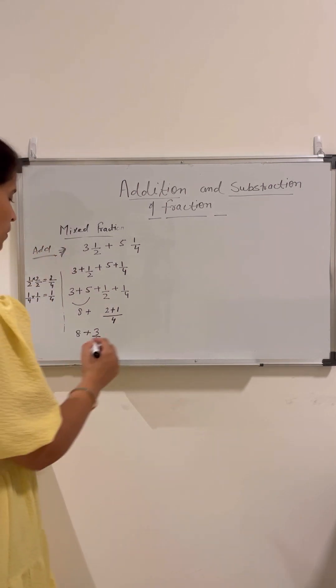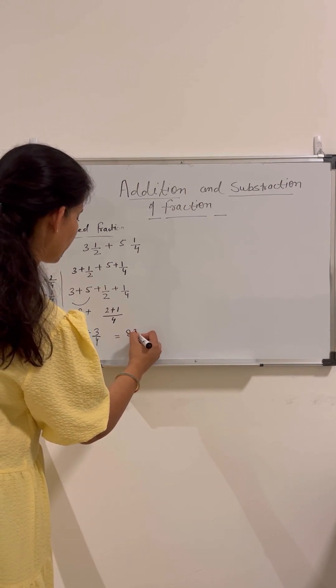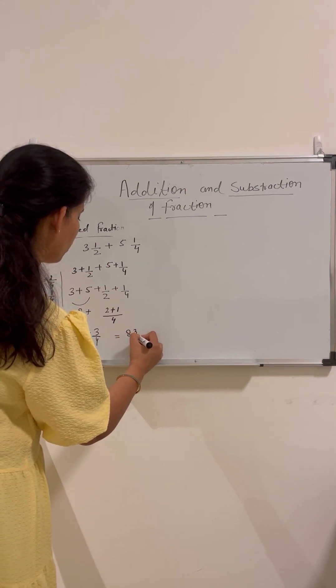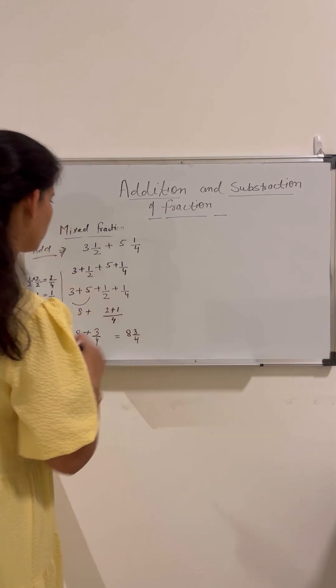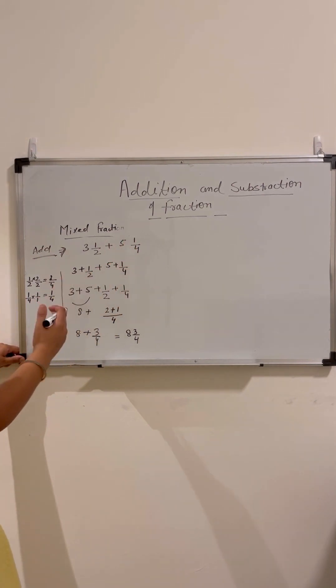So the result is 8 and 3 by 4. This is the first way to add mixed fractions.